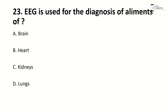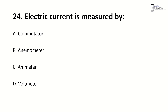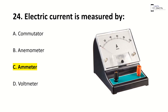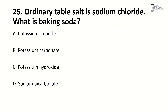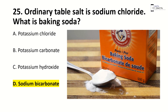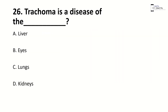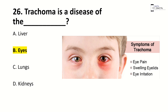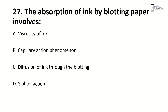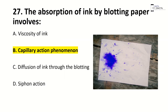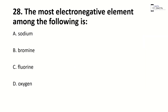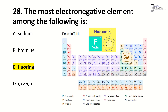EEG is used for diagnosis of ailments of — right answer is A, brain. And if ECG is asked, that is for heart. Electric current is measured by — right answer is C, ammeter. Ordinary table salt is sodium chloride; what is baking soda? Right answer is D, sodium bicarbonate. Trachoma is a disease of — right answer is B, eyes. The most electronegative element among the following is — right answer is C, fluorine.